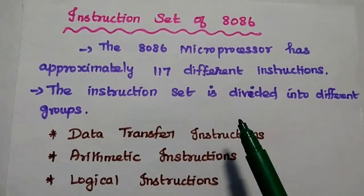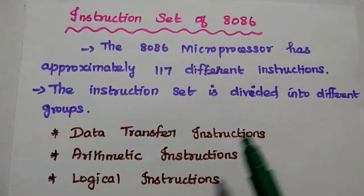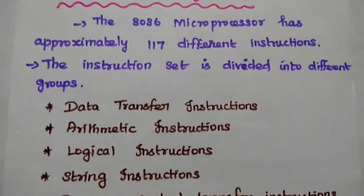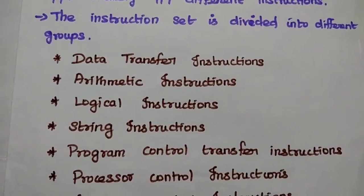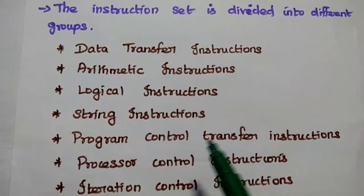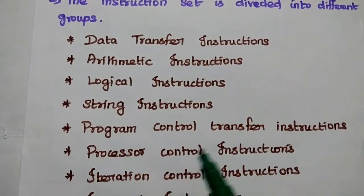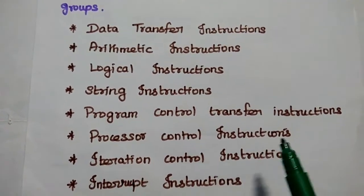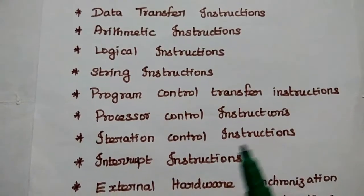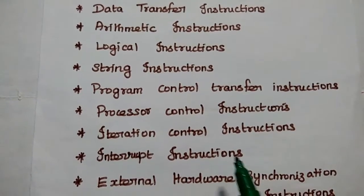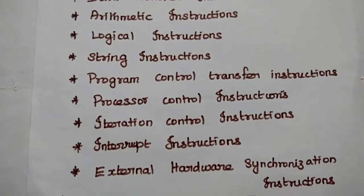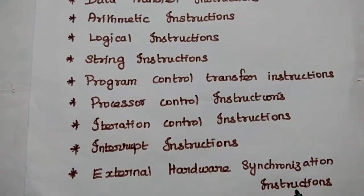These instructions can be divided into different groups based on their operation. These groups are: Data Transfer Instructions Group, Arithmetic Instructions, Logical Instructions, String Instructions, Program Control Transfer Instructions, Processor Control Instructions, Iteration Control Instructions, Interrupt Instructions, and External Hardware Synchronization Instructions.